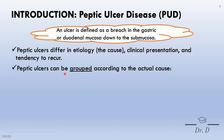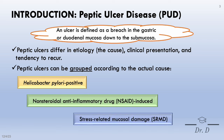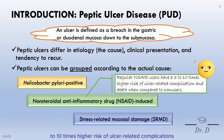Peptic ulcers can be grouped according to their actual cause. This includes Helicobacter pylori infections, non-steroidal anti-inflammatory drug-induced, or stress-related mucosal damage. Take note that regular NSAID users have a three to ten times higher risk of ulcer-related complications and death when compared to non-users.